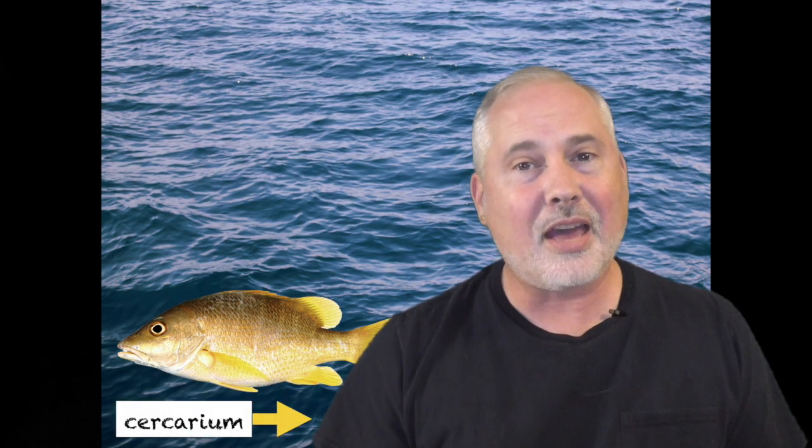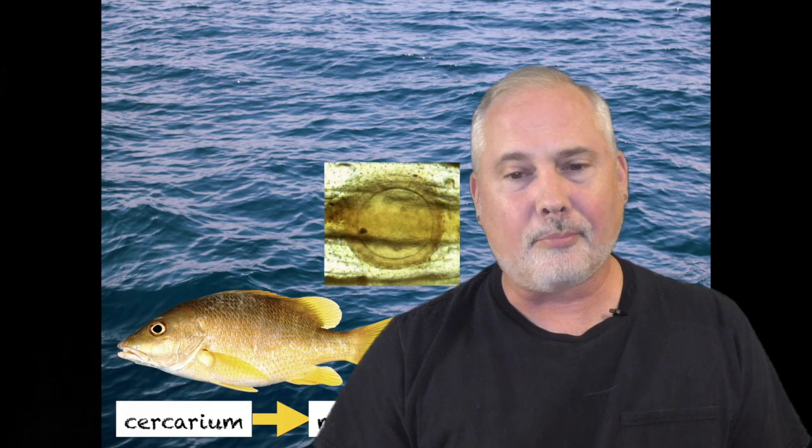The Cercaria are motile and will swim looking for the second intermediary host, a fish. The Cercaria may attach to the scales or burrow into the skin of the fish, into the muscles, where they will encyst and form another stage in the life cycle, a Metacercaria.